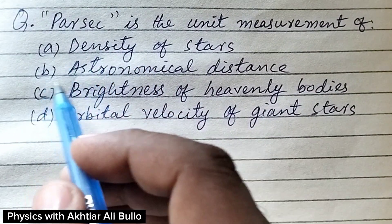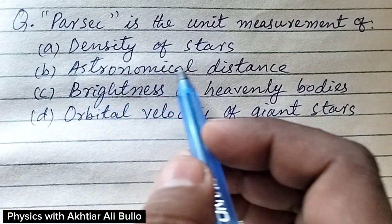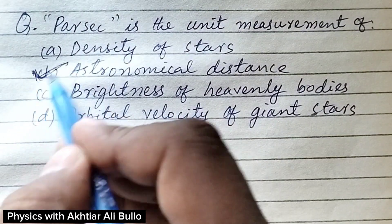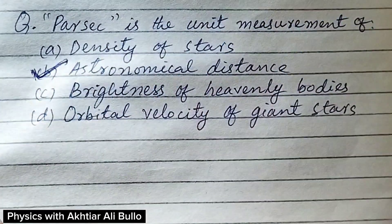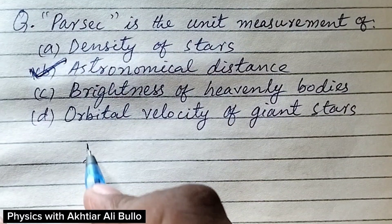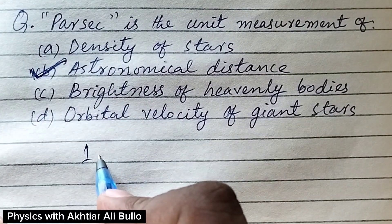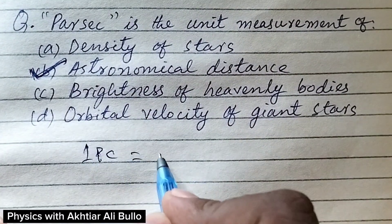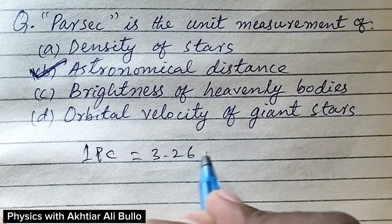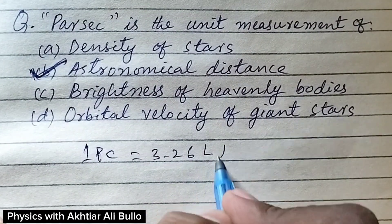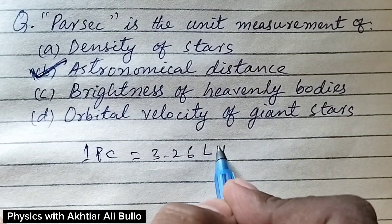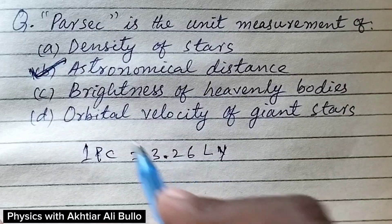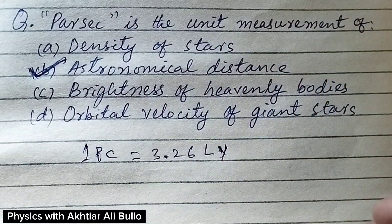So the correct option will be B, Astronomical distance. Parsec is equal to 3.26 light years, and it is the biggest astronomical unit.